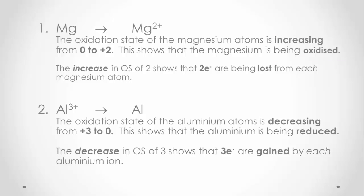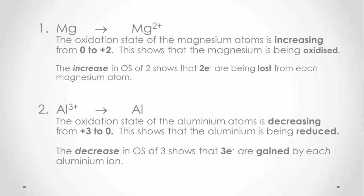When aluminium ions are reacted to form aluminium atoms, the oxidation state of the aluminium decreases from +3 to 0. This decrease in oxidation state shows that the aluminium ions have been reduced, and the decrease of 3 shows that 3 electrons have been gained by each aluminium ion.